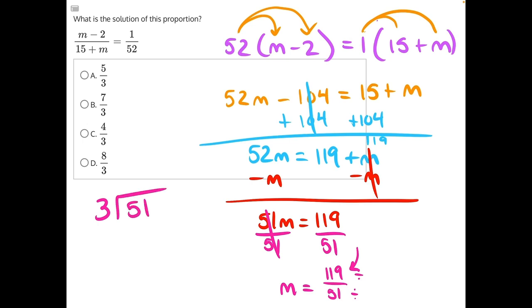So let's do that. 3 goes into 5 one time. 3 times 1 is 3, then we subtract and get 2 and bring down our 1. 3 goes into 21 seven times evenly with no remainder. So that means a common factor for both 119 and 51 should be 17.